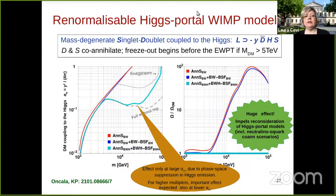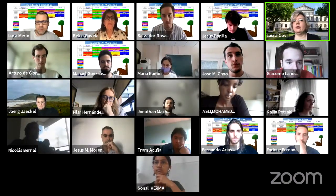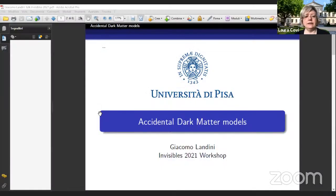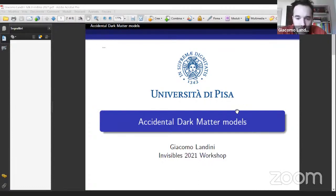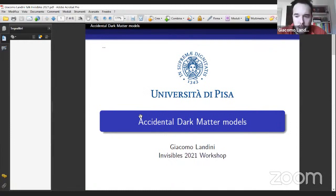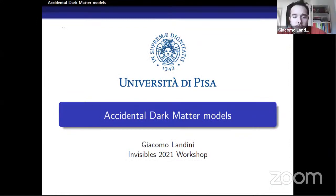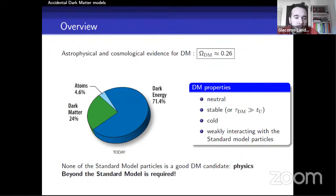We now proceed to the PhD forum. Talks are four minutes plus one question. The first PhD speaker is Giacomo Landini from the University of Pisa, talking about accidental dark matter models. We know from physical and cosmological data that about one-quarter of our universe is composed of dark matter, which must be stable or very long-lived, cold, and weakly interacting with standard model particles.